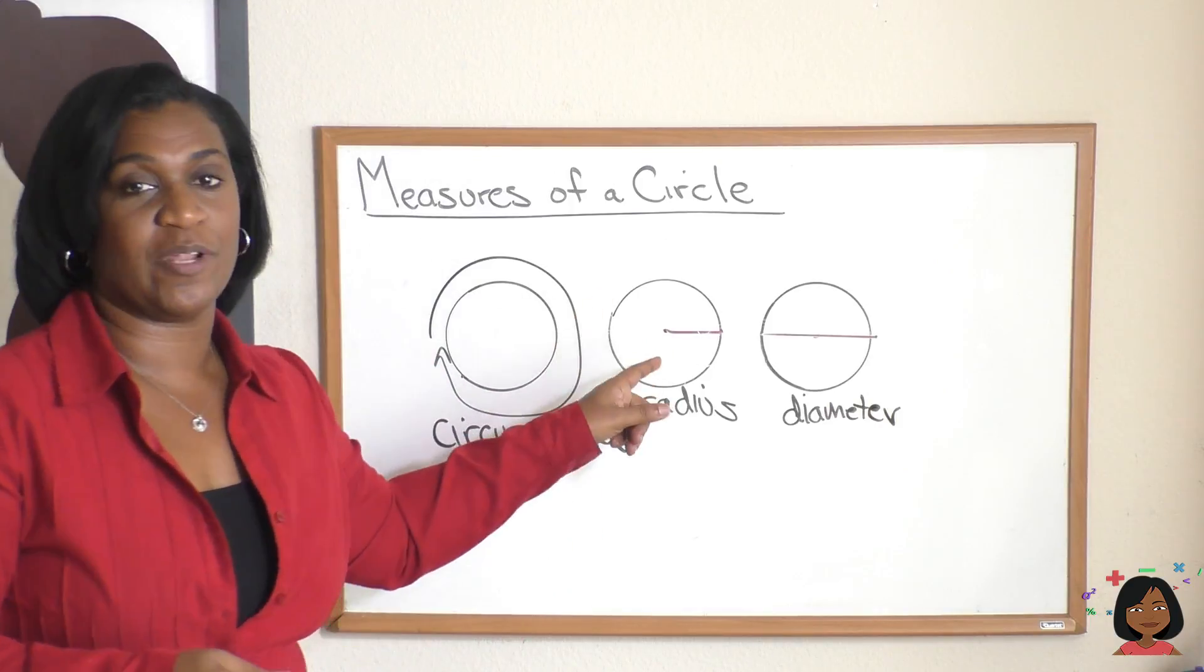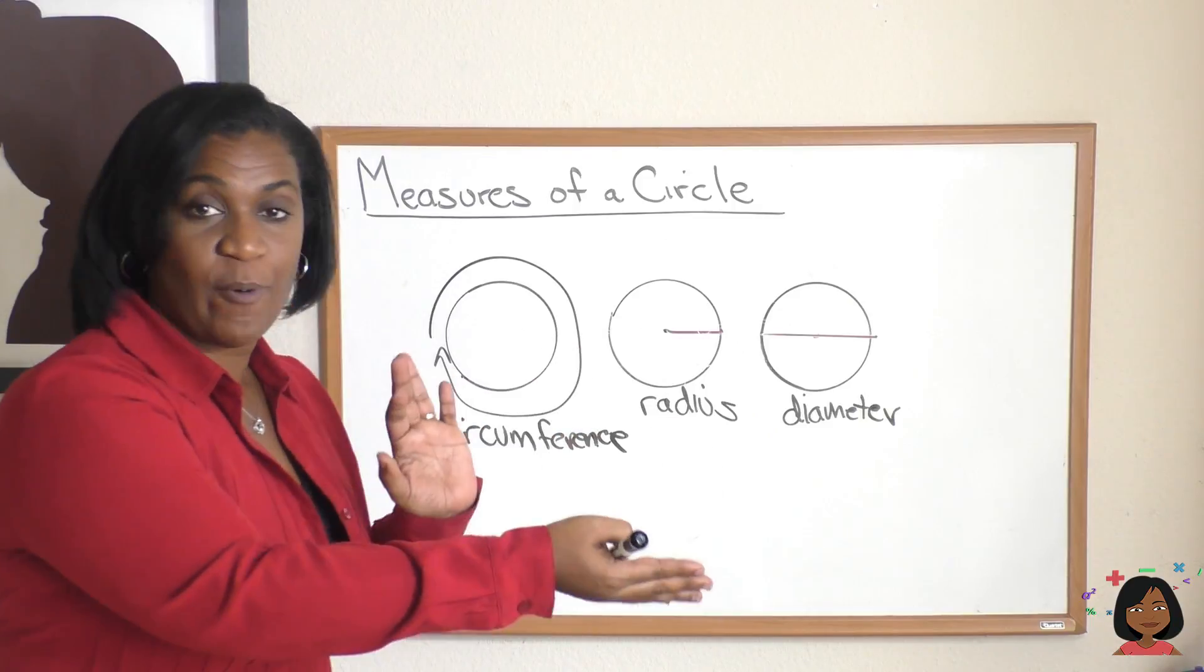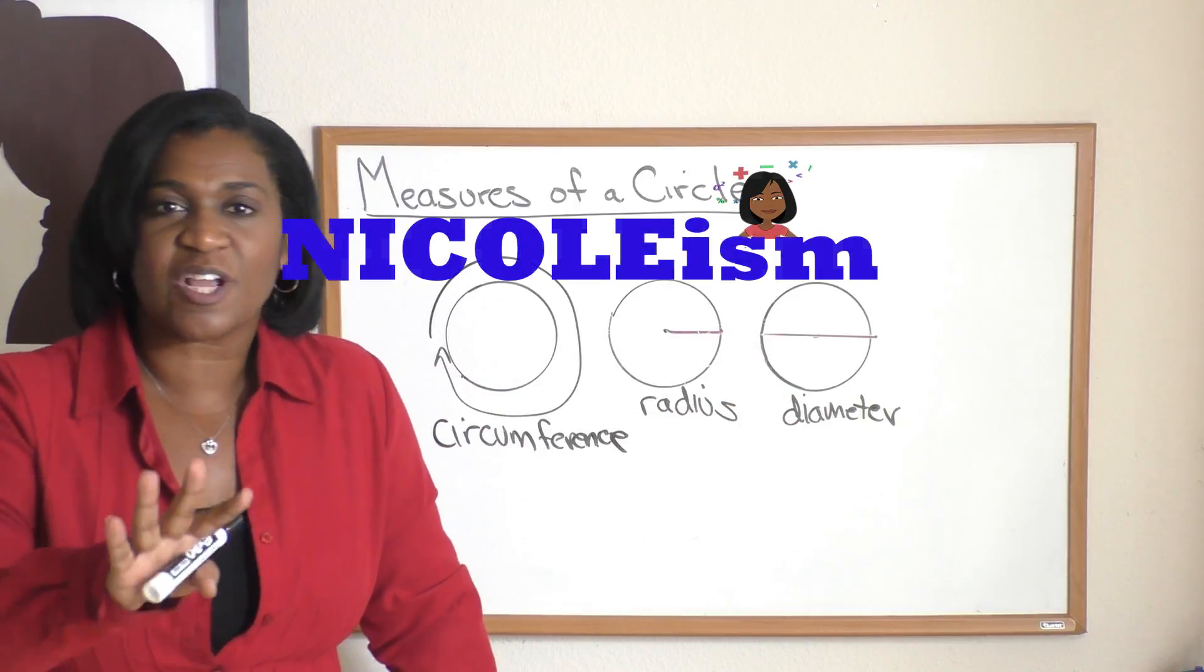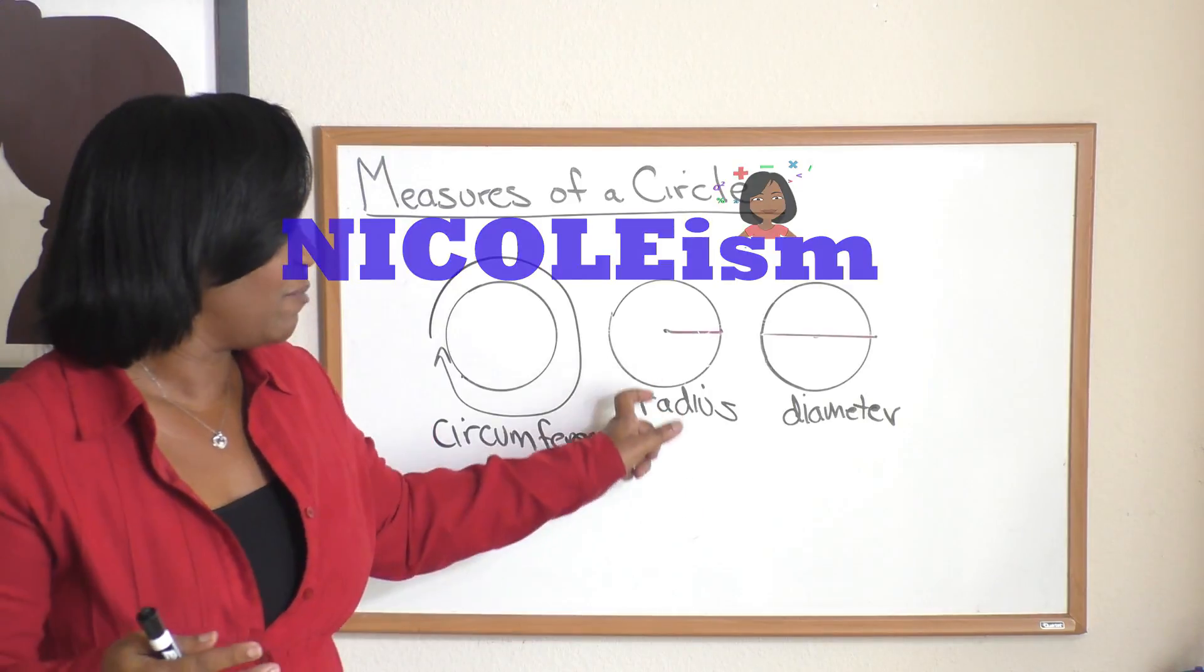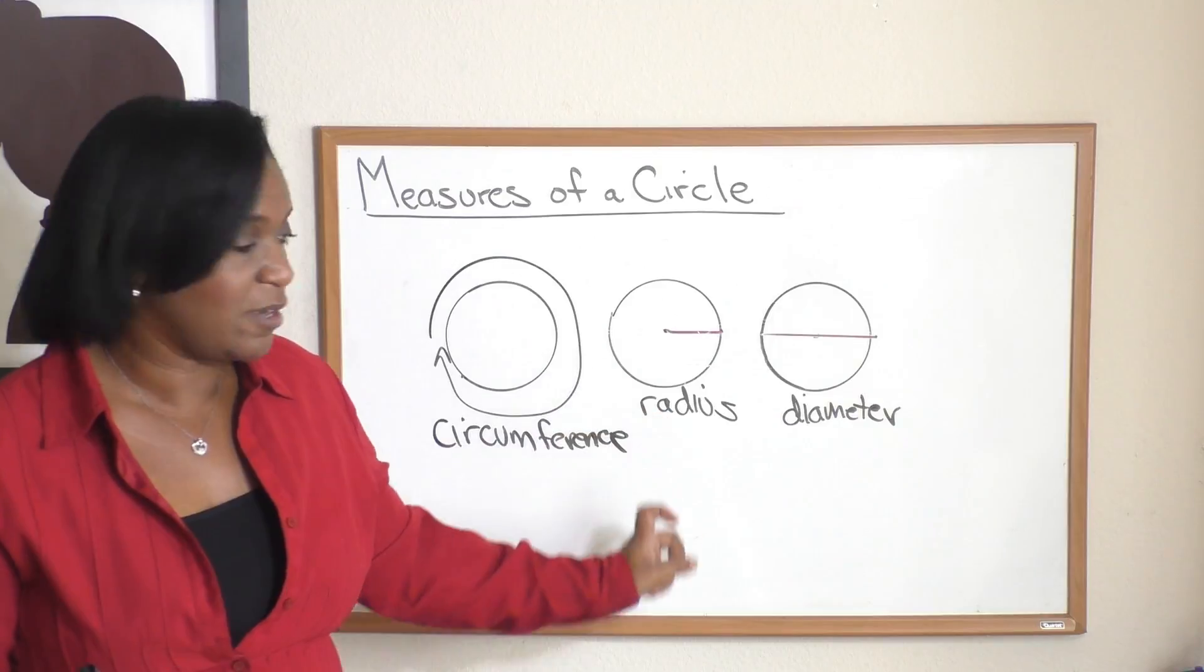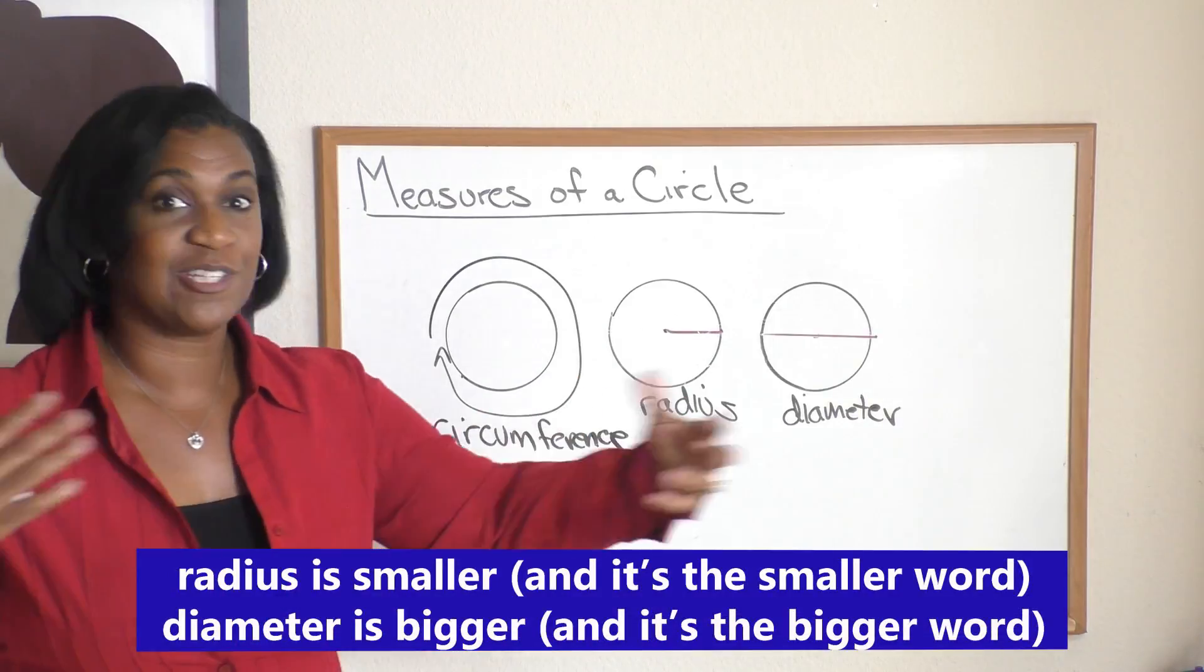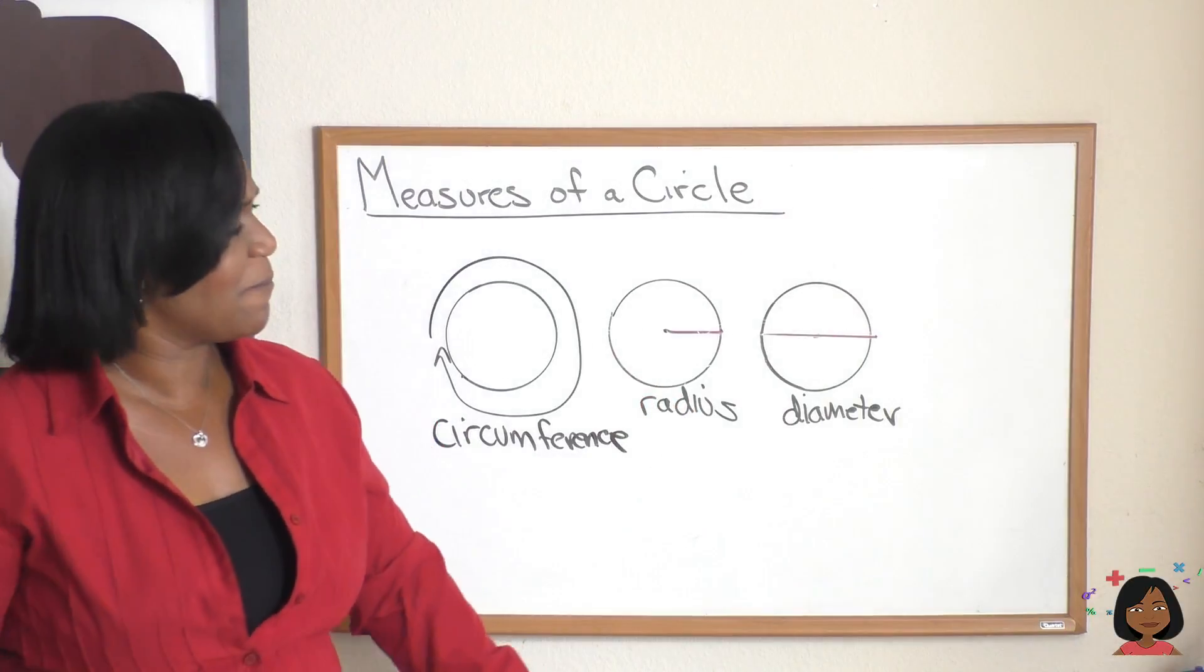So radius, you might notice, is half of the diameter, because it's only halfway across. Diameter is the full way across. In case you need a quick Nicolism to remember which one's radius, which one's diameter, just remember, radius is the smaller one, and radius is the smaller word out of the two. Diameter's longer, diameter's a longer word. Easy Nicolism to remember the two.